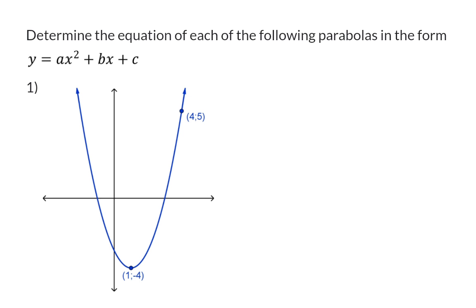Determine the equation of each of the following parabolas in the form y equals ax squared plus bx plus c. So even though we might not necessarily start with the standard form equation, that is the form in which we need to give our final answer. In the sketch, we are given the turning point of the graph, as well as an extra coordinate.